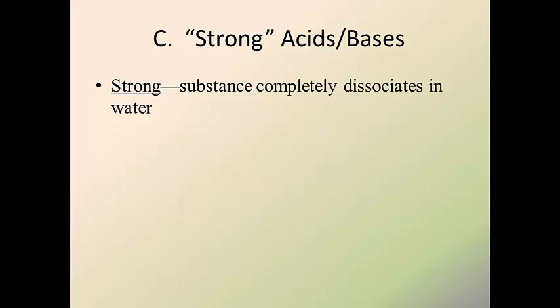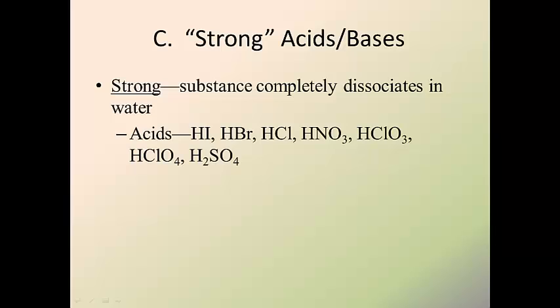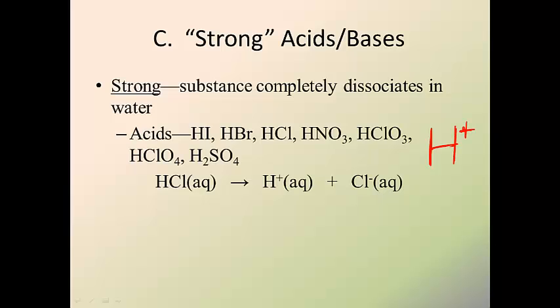There are seven strong acids and seven strong bases. Your strong acids are HI, HBr, HCl, HNO3, HClO3, HClO4, and H2SO4. When they go into a chemical reaction, this is what complete dissociation looks like — the H-plus and the Cl-minus break up instantly. There is no partiality; it is no longer HCl, it is completely H-plus and Cl-minus. What you want to remember is that in a reaction, any of those seven strong acids are basically going to be written as just H-plus.